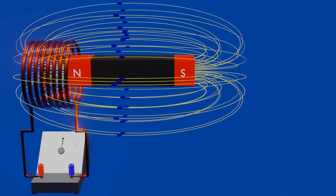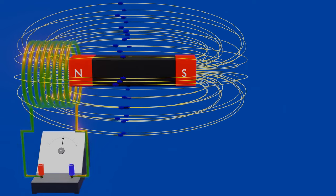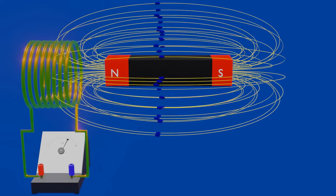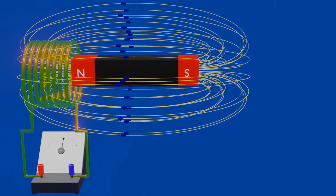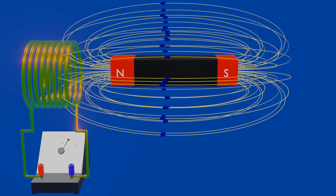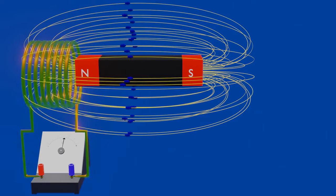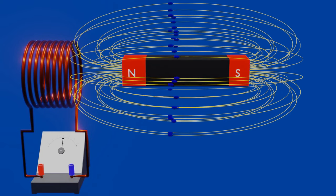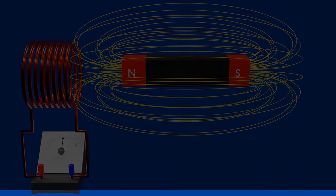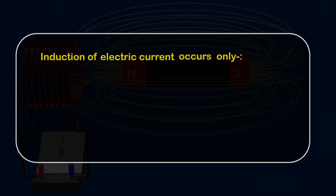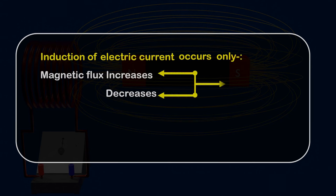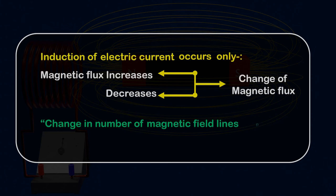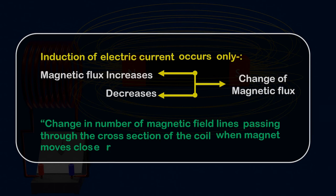As a result, electric current induces in the coil only if the circuit is closed. But as we stop moving the bar magnet, there is no indication of electric current in the galvanometer. Similarly, when we start moving the bar magnet away from the coil, the magnetic flux changes again. There is an indication of electric current as long as we are moving the bar magnet away. Induction of electric current occurs only when magnetic flux increases or decreases — there must be a change of magnetic flux, that is a change in number of magnetic field lines passing through the cross section of the coil.